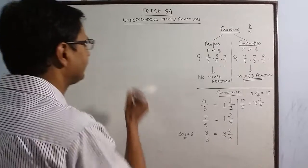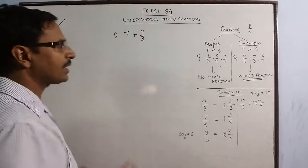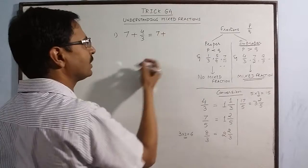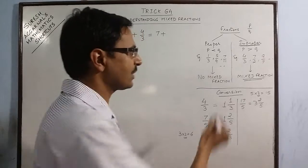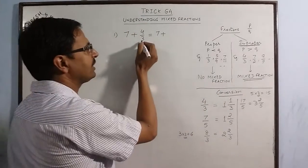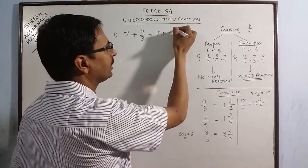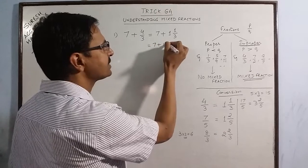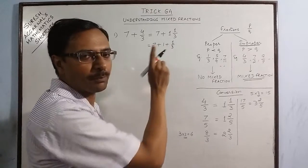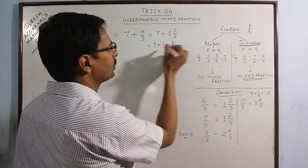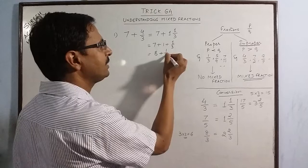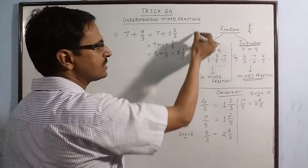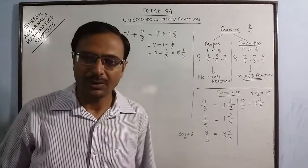Say we have one more example here. Suppose we have to add 7 and 4 by 3 and we are asked to express the result as a mixed fraction. In this case, 7 plus, now see 4 by 3 is an improper fraction, so we need to convert it into a mixed fraction. 3 ones are 3, we retain 1, and 4 minus 3 is 1 and denominator is the same. Now this becomes 7 plus 1 plus 1 by 3. We can separate these two and put a plus sign in between. So 7 plus 1 is 8 plus 1 by 3, and if we remove this plus sign, then it becomes a mixed fraction. So 8 and 1 by 3 is the final result expressed in the form of a mixed fraction.